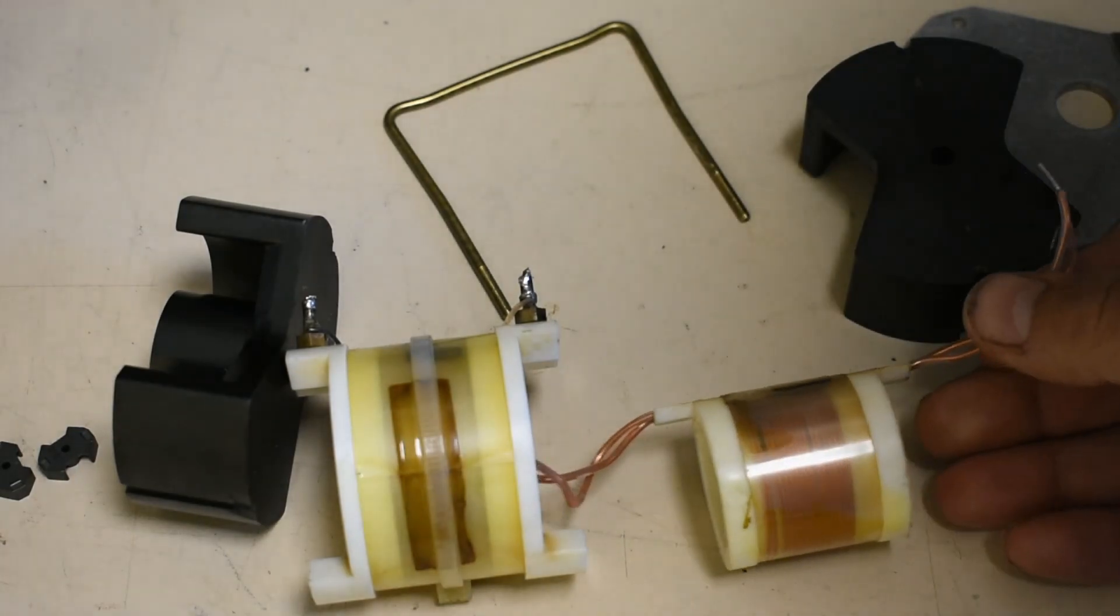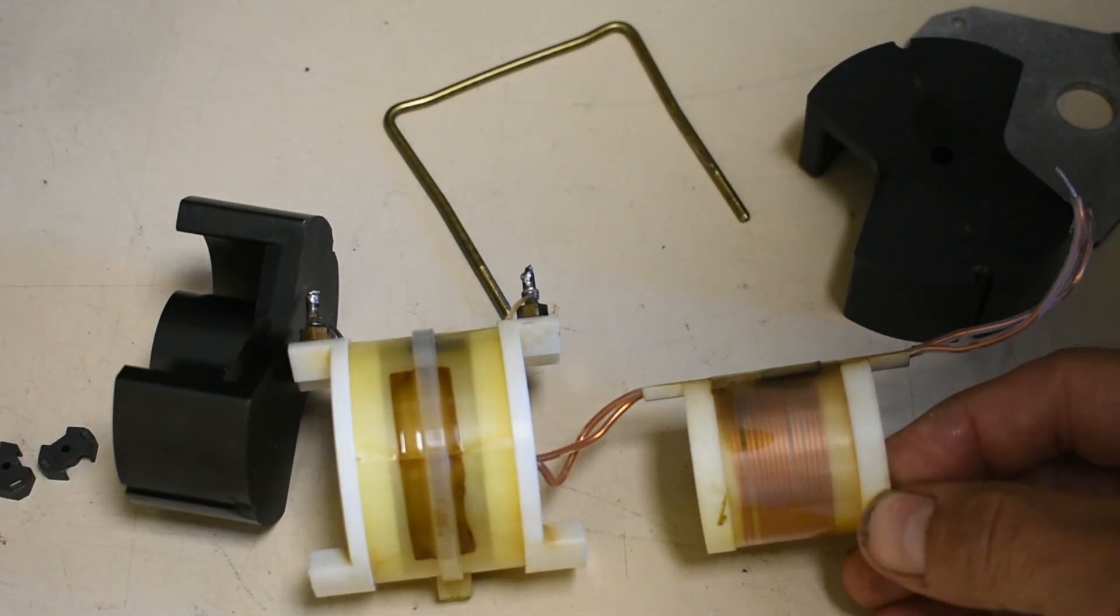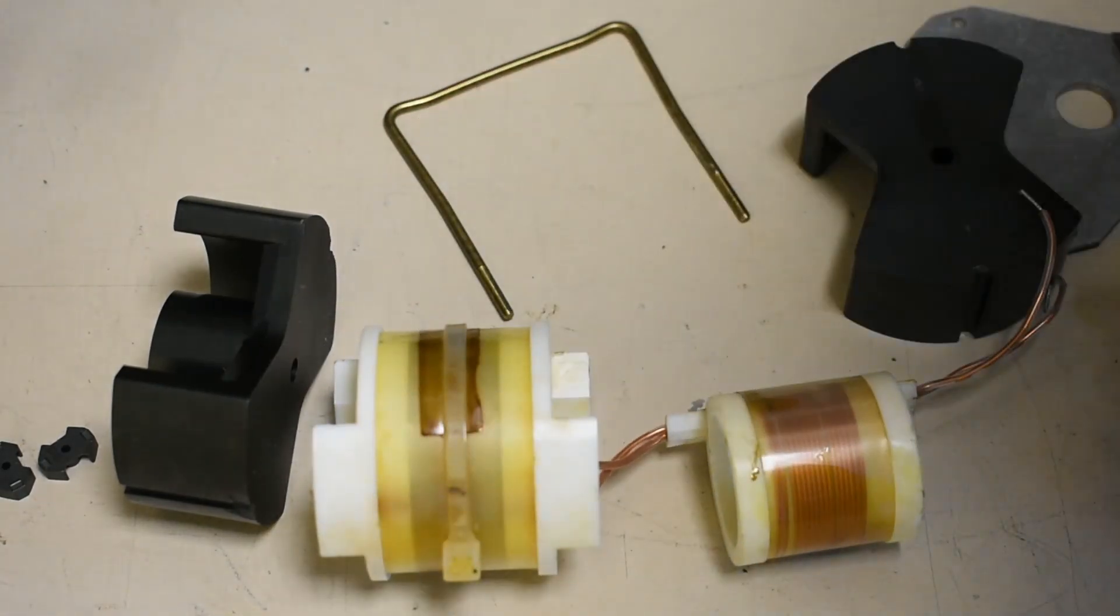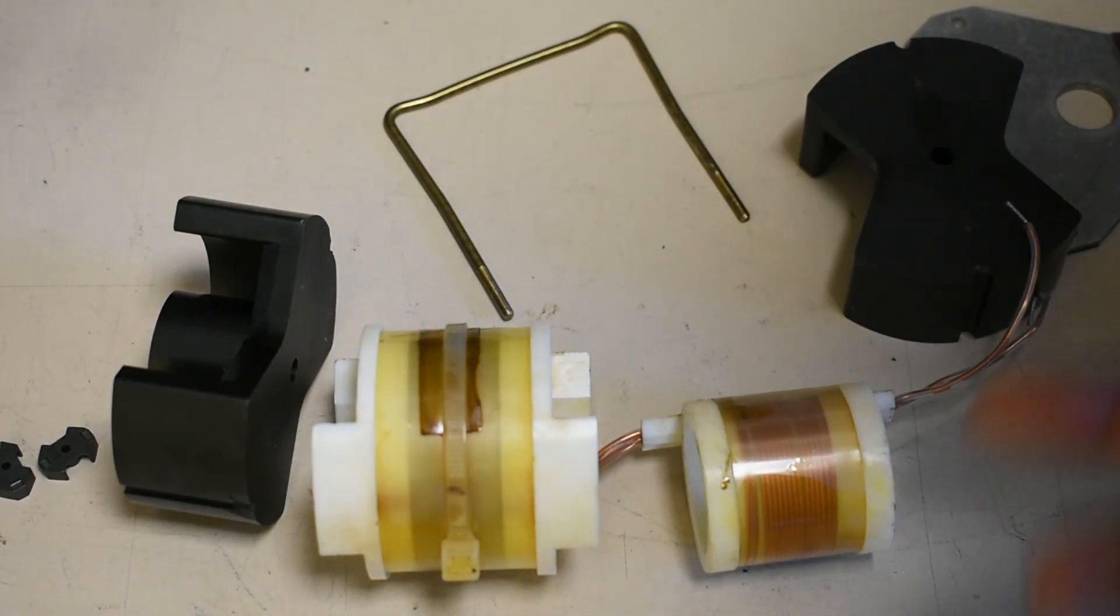So showing the transformer disassembled, here is your primary and this is our high voltage secondary. The two outputs along the top here. Very few turns here, it's a high frequency transformer. This one's running at about 30 kHz.